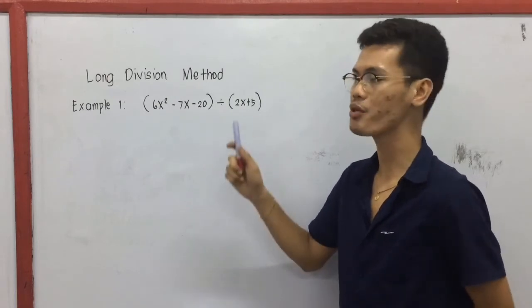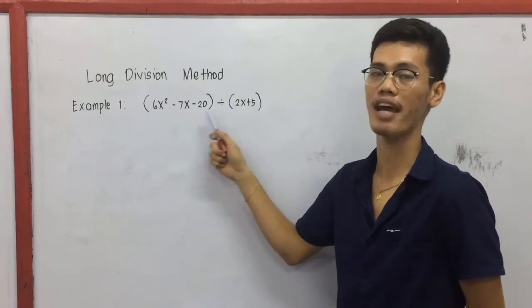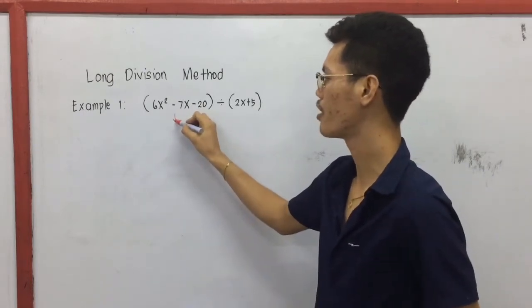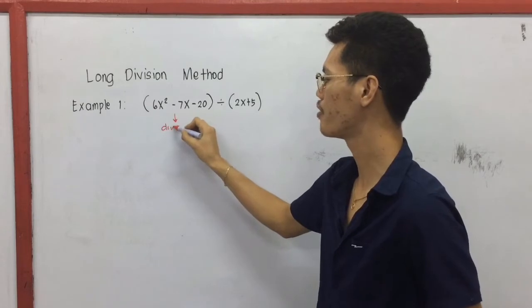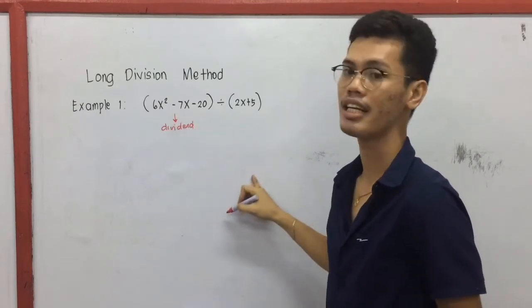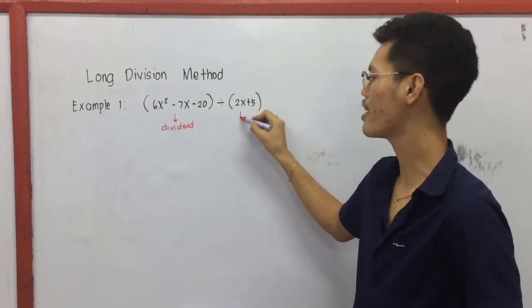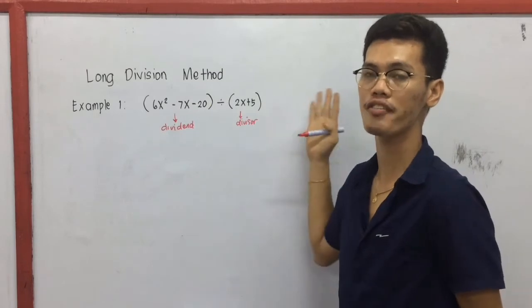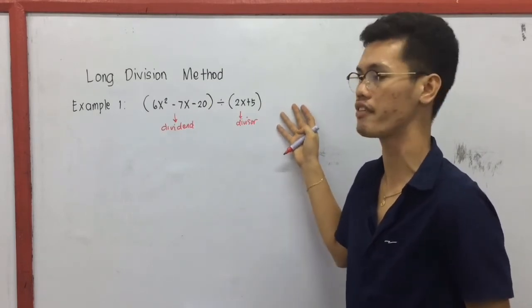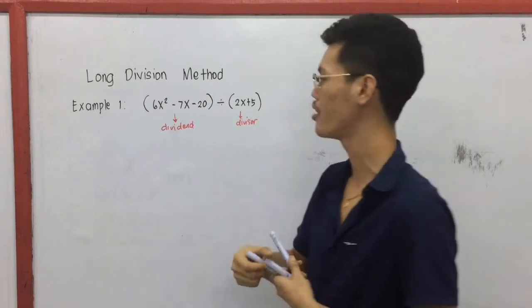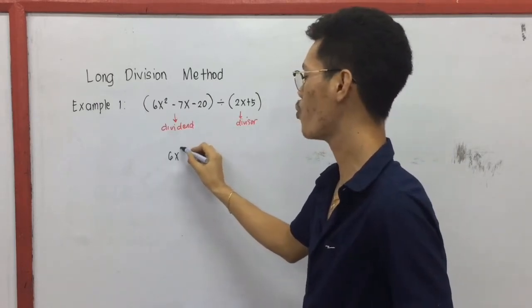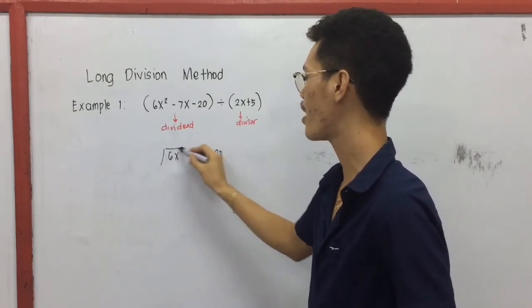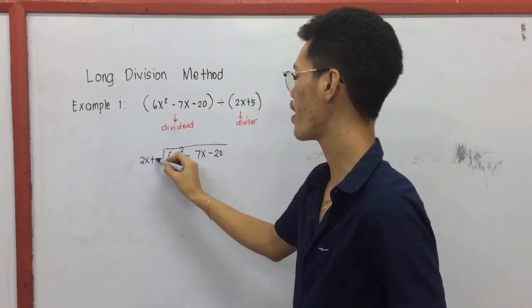We have to identify the dividend and we have to also identify the divisor. In this case, this polynomial 6x squared minus 7x minus 20 is our dividend, and 2x plus 5 is our divisor. So we transform this into the regular format of long division.